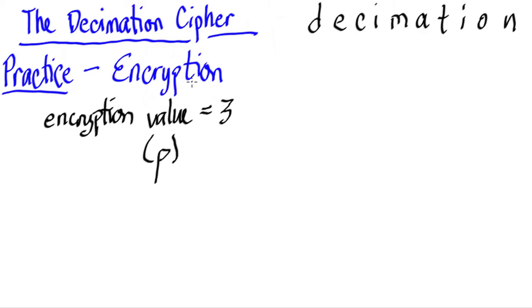So what we're going to do is to encrypt this word decimation using the decimation cipher. And we're going to make use of the encryption value, which is equal to 3. Some books would like to call the encryption value to be p, so that's equal to 3.